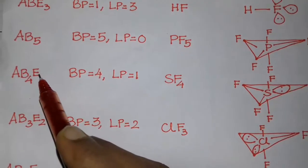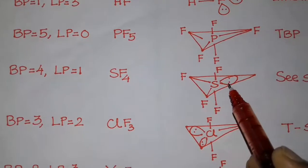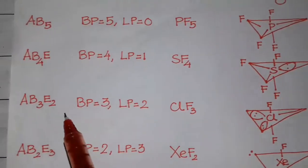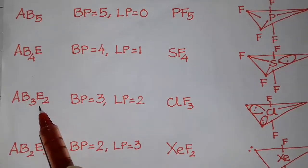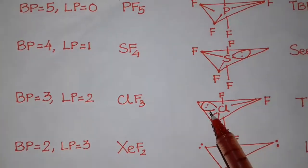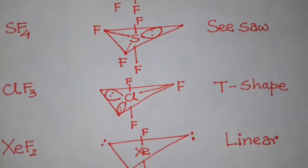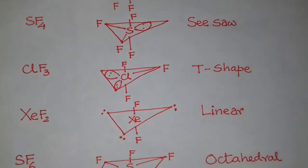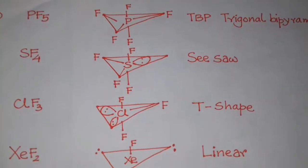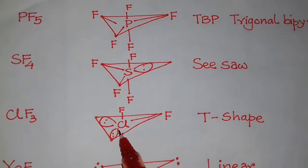Next case is H equals 5, type AB4E: bond pair is 4 and lone pair is 1 — SF4. Sulfur has one lone pair in the equatorial position and the shape is seesaw. Next case is AB3E2, H equals 5: bond pair is 3 and lone pair is 2 — ClF3. Two lone pairs are placed in the equatorial position. In TBP cases, each lone pair is always placed in the equatorial position to have minimum repulsion, and the angle between lone pairs is 120 degrees.